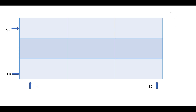Here the value of n given to us is 3, meaning we need to create a matrix of size n squared. The total number of elements will range from 1 up to 9. The first thing we do is create four pointers: starting row (SR), ending row (ER), starting column (SC), and ending column (EC). SR and SC are set to 0; ER and EC are set to n−1, which is 2.